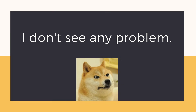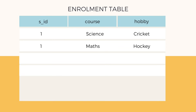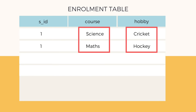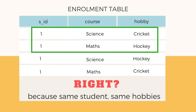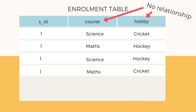You must be thinking what problem this could lead to. Well, the student with S ID 1 has hobbies cricket and hockey, and has opted for subjects science and maths. These two rows of data will give rise to two more additional rows. And there is no relationship between the course opted and the hobby of the student.